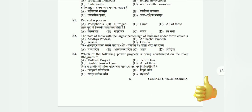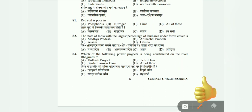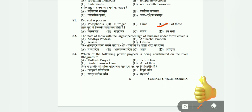Question 81: Red soil is poor in — phosphorus, nitrogen, lime, or all of these? The correct answer is all of these. Question 82: The state of India with the largest percentage of land area under forest cover is Madhya Pradesh, Arunachal Pradesh, Assam, or Odisha? The correct answer is B, Arunachal Pradesh.